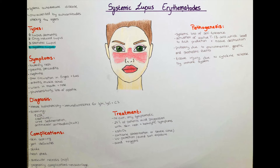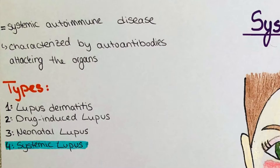Systemic lupus erythematodes is a systemic autoimmune disease which is characterized by the presence of autoantibodies which attack the cells of the patient's own organs. There is not only systemic lupus but also three other types: lupus dermatitis, drug-induced lupus, neonatal lupus, and today's topic, systemic lupus erythematodes.